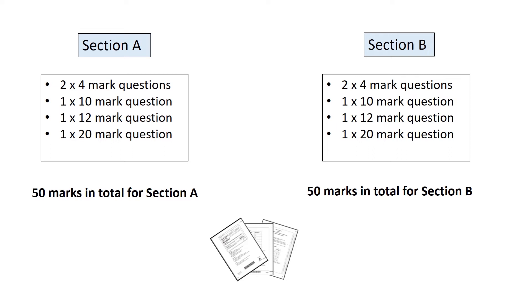There are four 4-mark questions that you would answer in this paper, and the command word for them tends to be 'Explain' or 'Calculate'. So it could be 'Explain the impact of interest rates' or 'Explain the benefit of job production.' For calculate questions, you might be asked to calculate particular ratios or any other aspect of the Theme 2 or Theme 3 specification.